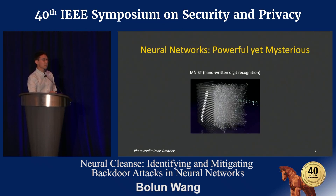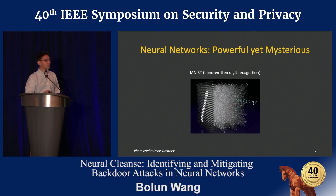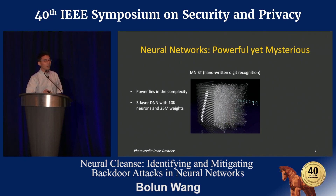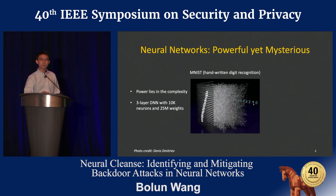This is a very simple task — a handwritten digit recognition task. All you need to do is to throw in this three-layer network, train it with tens of thousands of images, and you would have an almost perfect model. Then I realized that the power of deep learning models is actually coming from the complexity of the model. Even for something as simple as this, we're using a three-layer network that has 10,000 neurons and 25 million weights — a very complicated and powerful statistical model.